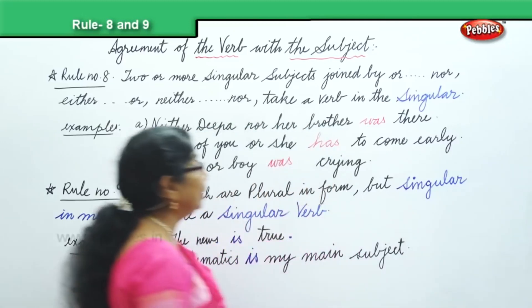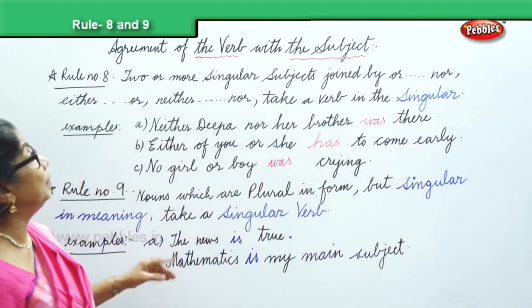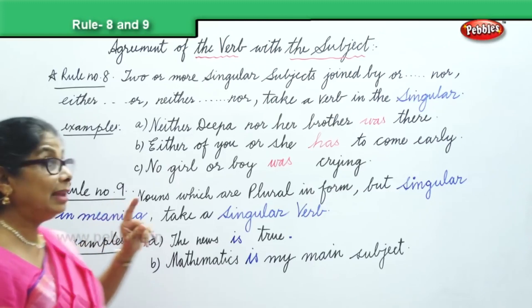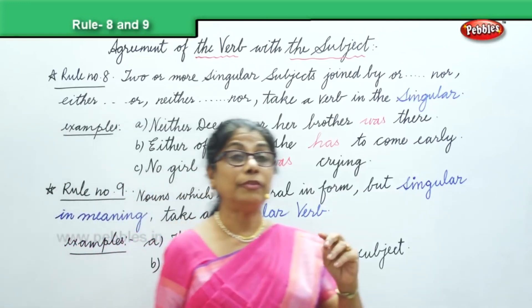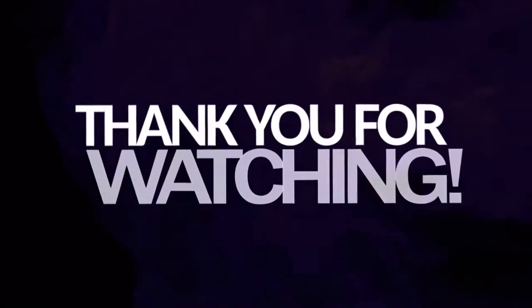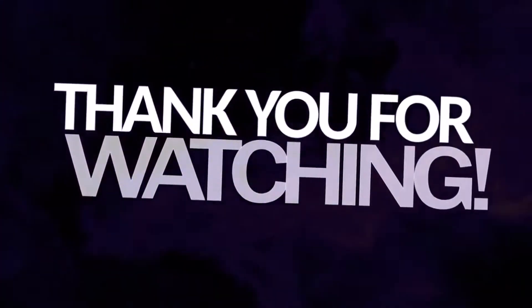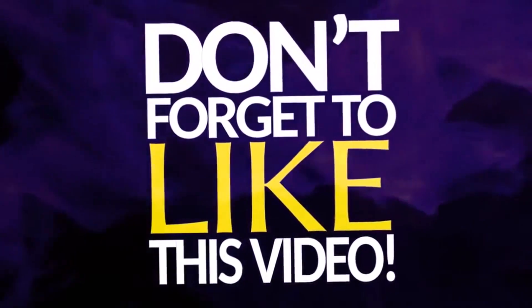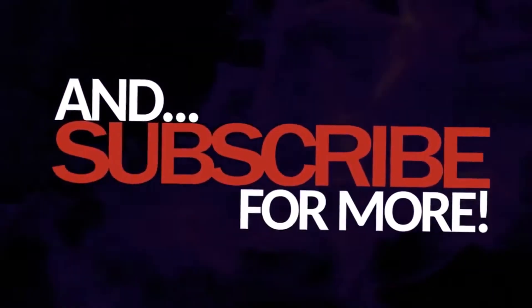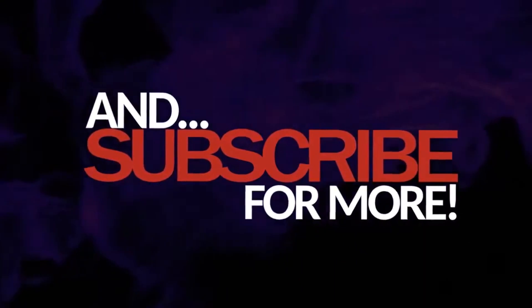So we have done the verb agreement with the subject — we have done nine rules. We have a few more rules to go through.